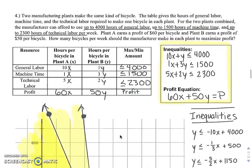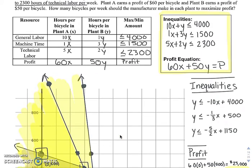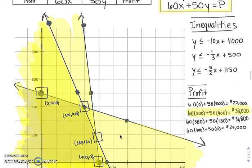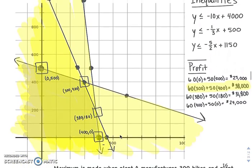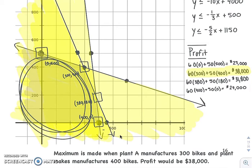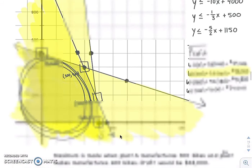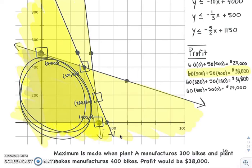So hopefully when you do it, it might go a little quicker since I was talking you through everything. But really, you start with coming up with your inequalities. You graph them like you've done in the past. And then you're just testing those border points of just the area that's a solution for all three inequalities that you graphed and see which one gives you the best profit when you plug them into your profit equation.